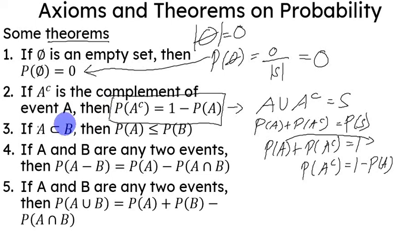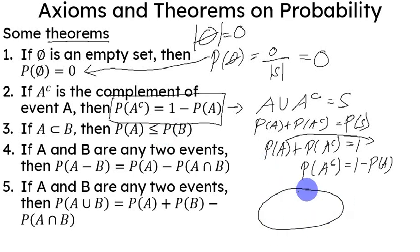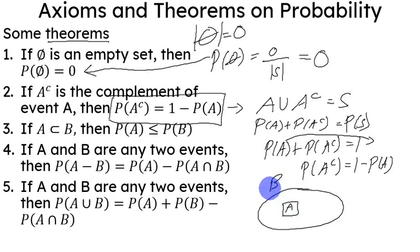Next, if A is a proper subset of B, then the probability of A is less than the probability of B. If A is a subset of B — let's say this is B and this is A — then A will have fewer elements than B. So if you have fewer elements in the numerator with the same denominator, you'll have a smaller fraction. That's why the probability of A is less than the probability of B.